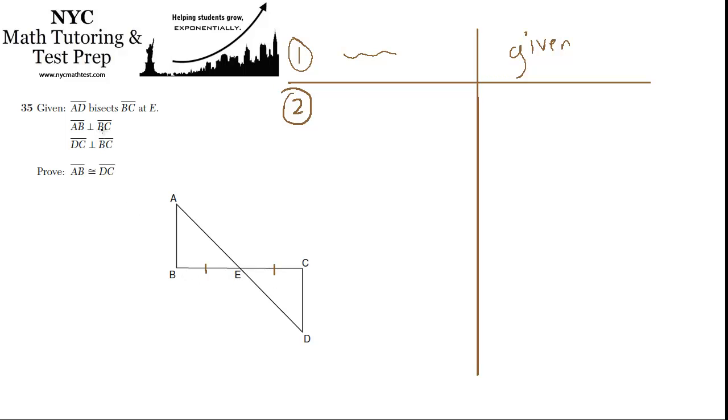AB is perpendicular to BC, so that's a right angle. And DC is perpendicular to BC, so that's a right angle. We want to prove that AB is congruent to DC, so this guy is congruent to this guy.